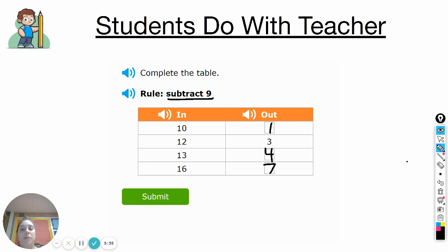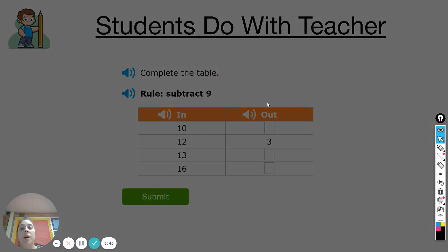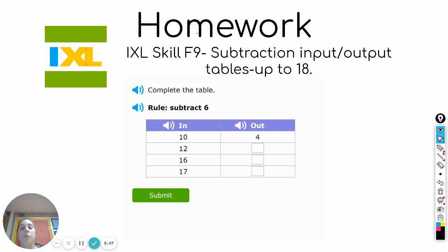So it's all about looking for those patterns and making sure that that rule applies to each of the numbers. Hopefully your numbers matched mine. You can erase your whiteboard. Now you're at the part where you're going to work on your homework alone. It's IXL skill F9, subtraction input output tables up to 18. It's going to look just like we were practicing where you have a number, you have a rule that you have to apply to that number, and then you have to put what the answer would be. Go ahead and begin.